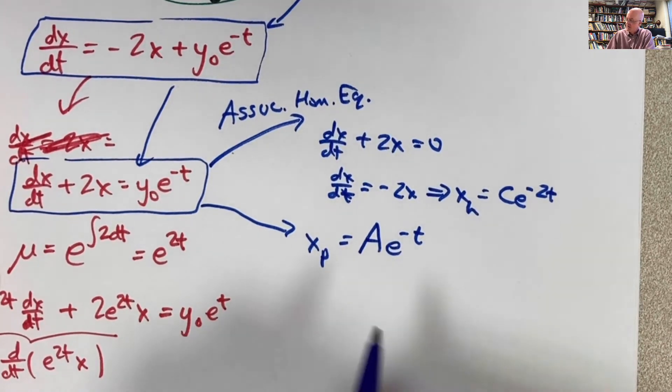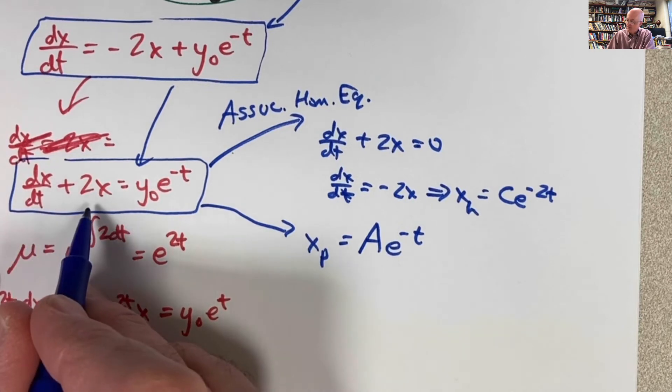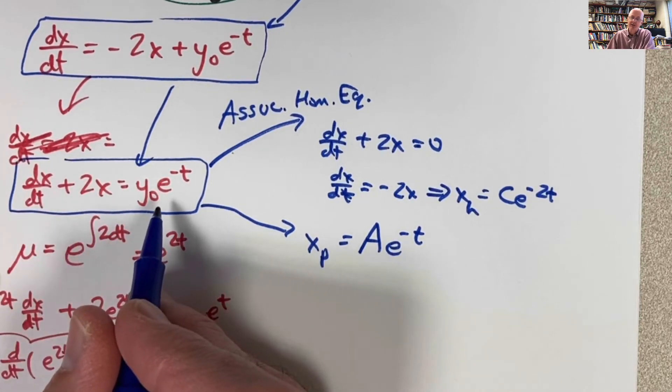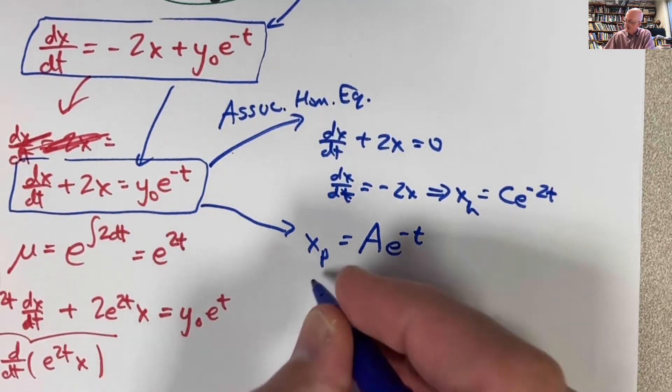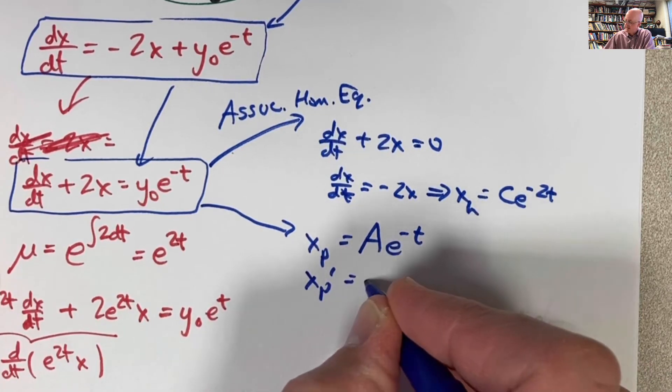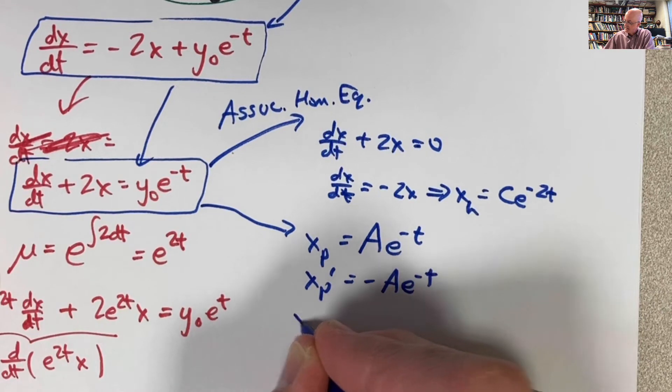How do you determine it? You just hope it works effectively. Take its derivative, add 2 times itself, set it equal to this, and ask yourself, does any value of a make this left-hand side ultimately equal to the right-hand side? So its derivative, xp prime, by the chain rule, is negative a e to the negative t.